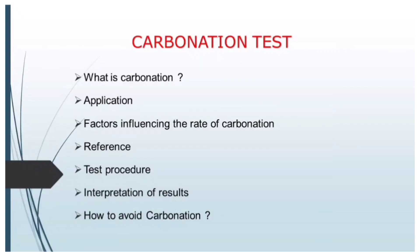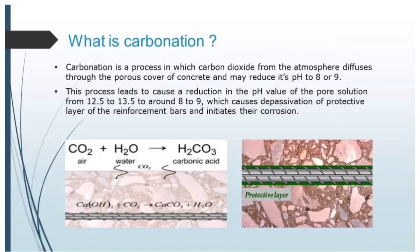Carbonation is a chemical process where carbon dioxide in the atmosphere diffuses through the porous concrete surface, making the concrete more acidic. The pH of the concrete reduces from 12.5 to 8 or 9. Here you can see the reaction: carbon dioxide in the atmosphere reacts with moisture to form carbonic acid.